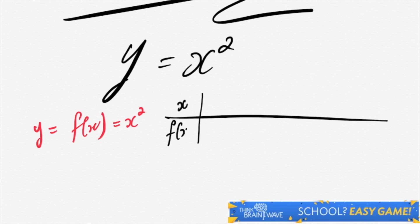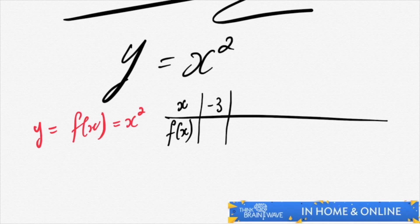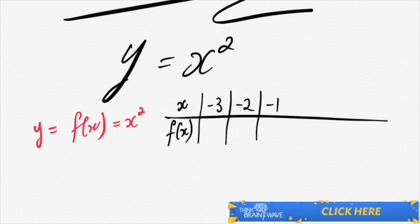This means that we have x at the top and f of x below. We will fill in a table as follows: minus 3, minus 2, minus 1, 0, 1, 2, and 3.